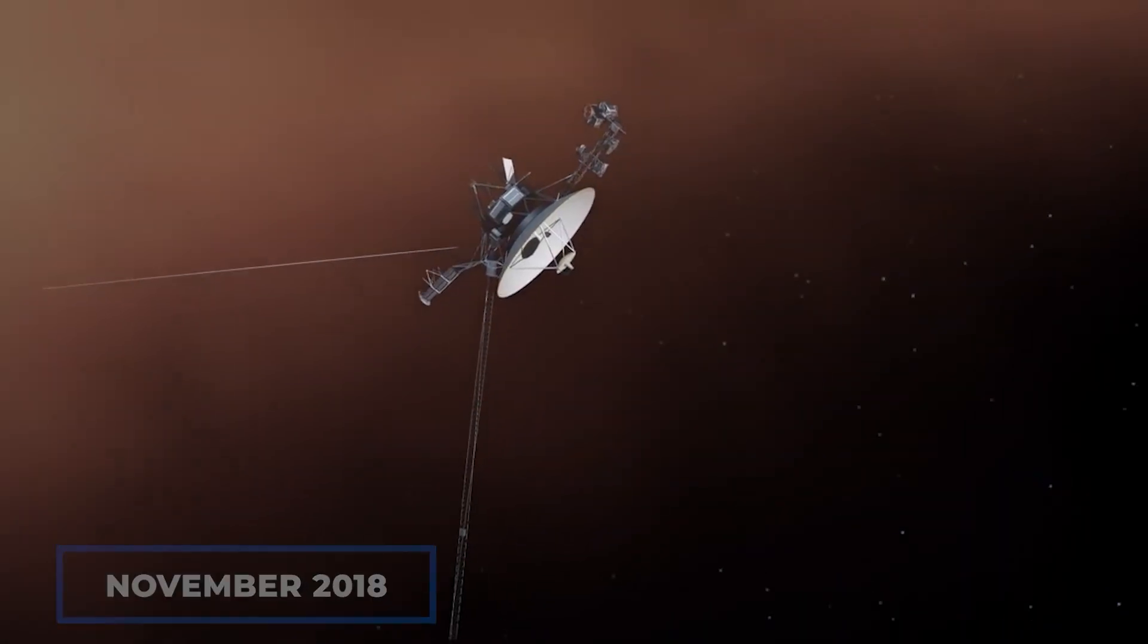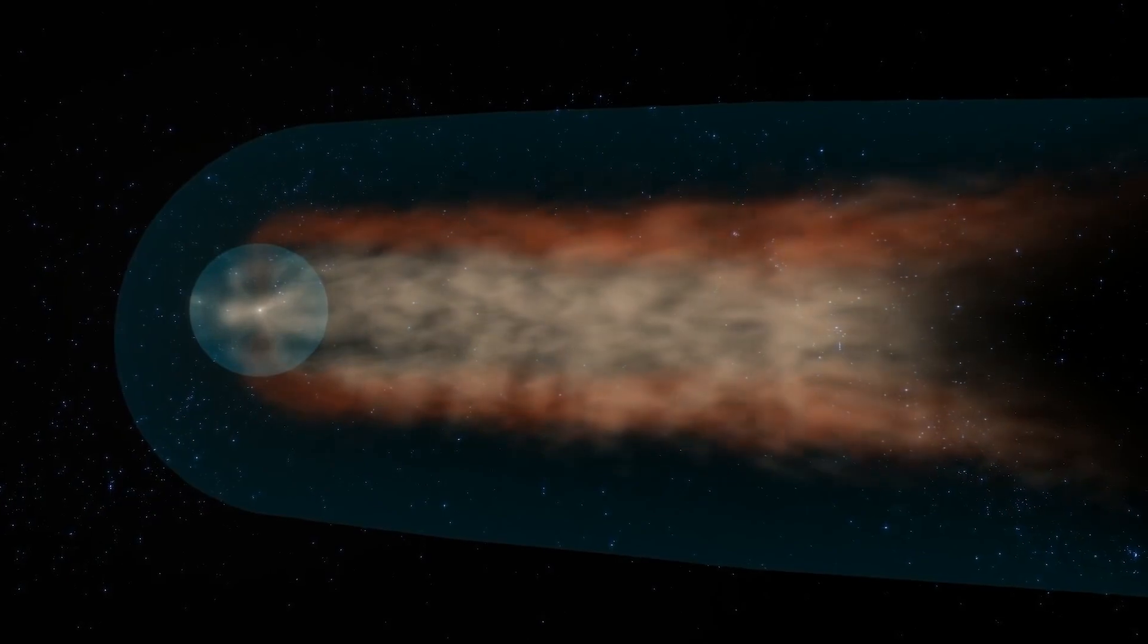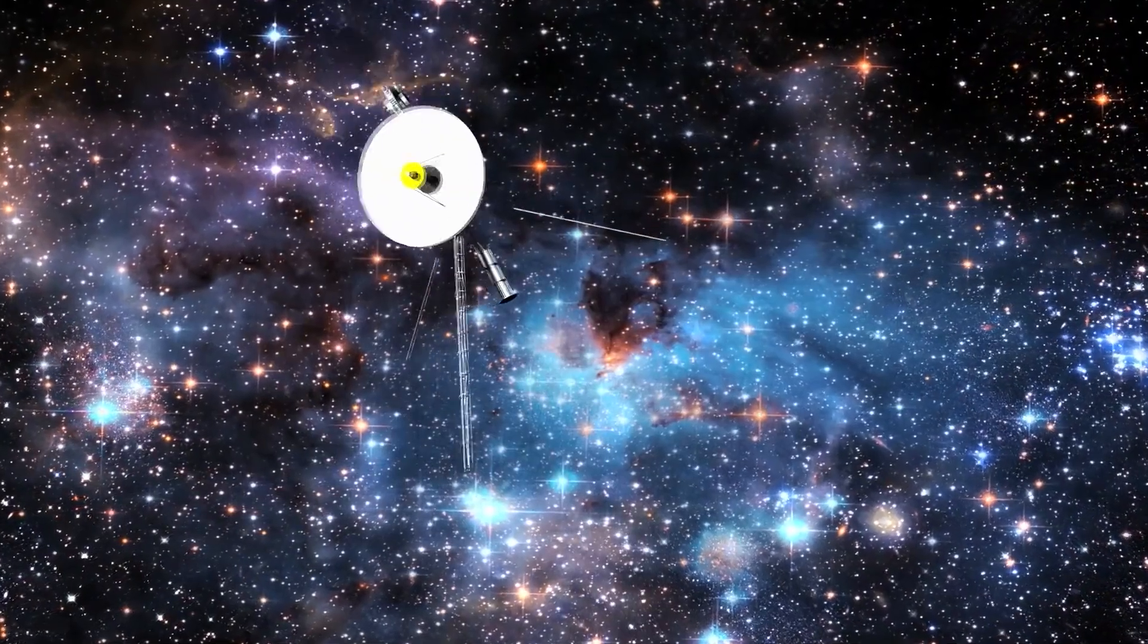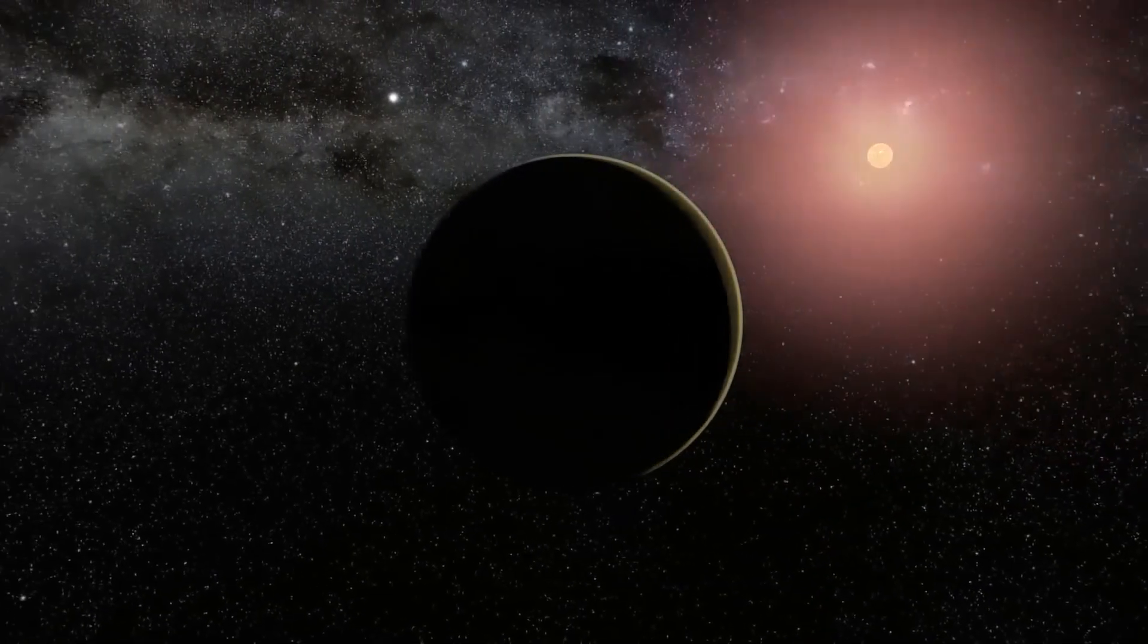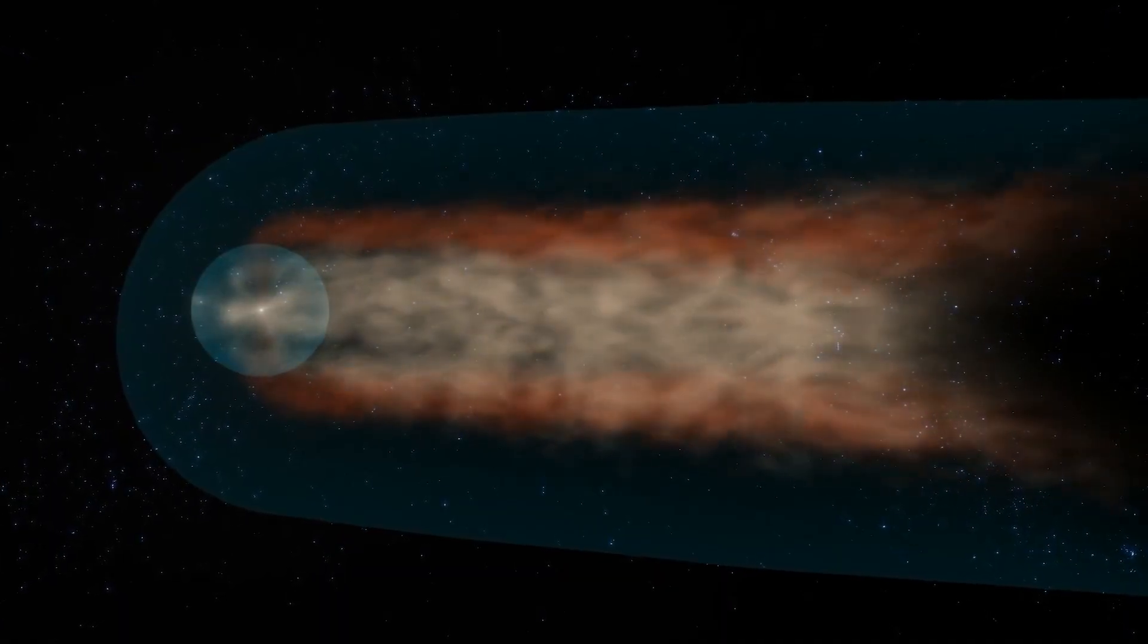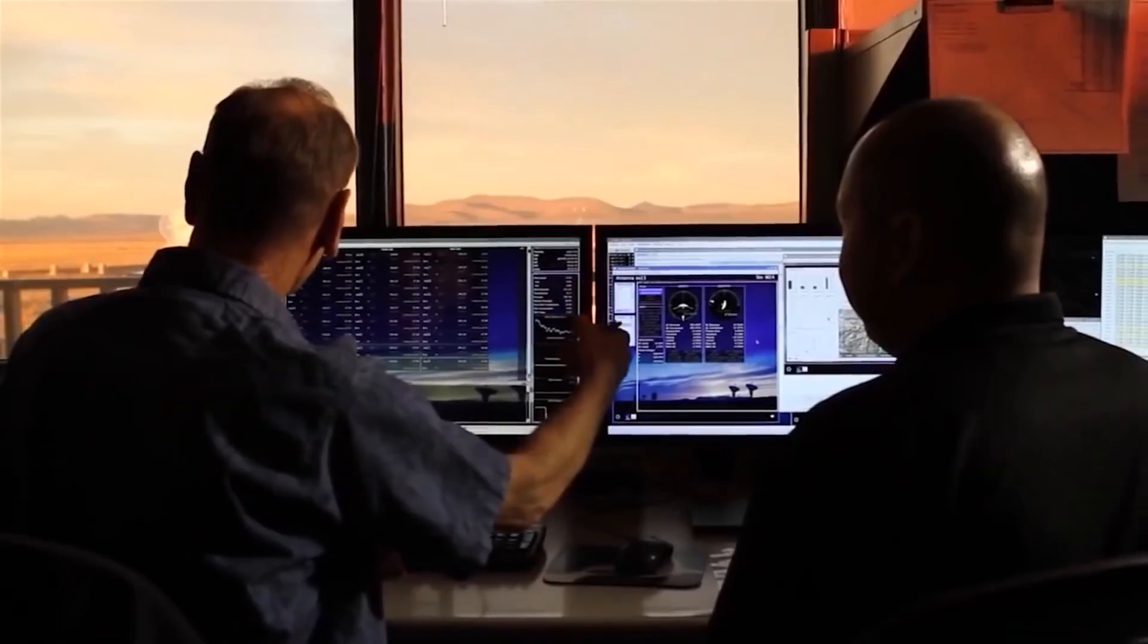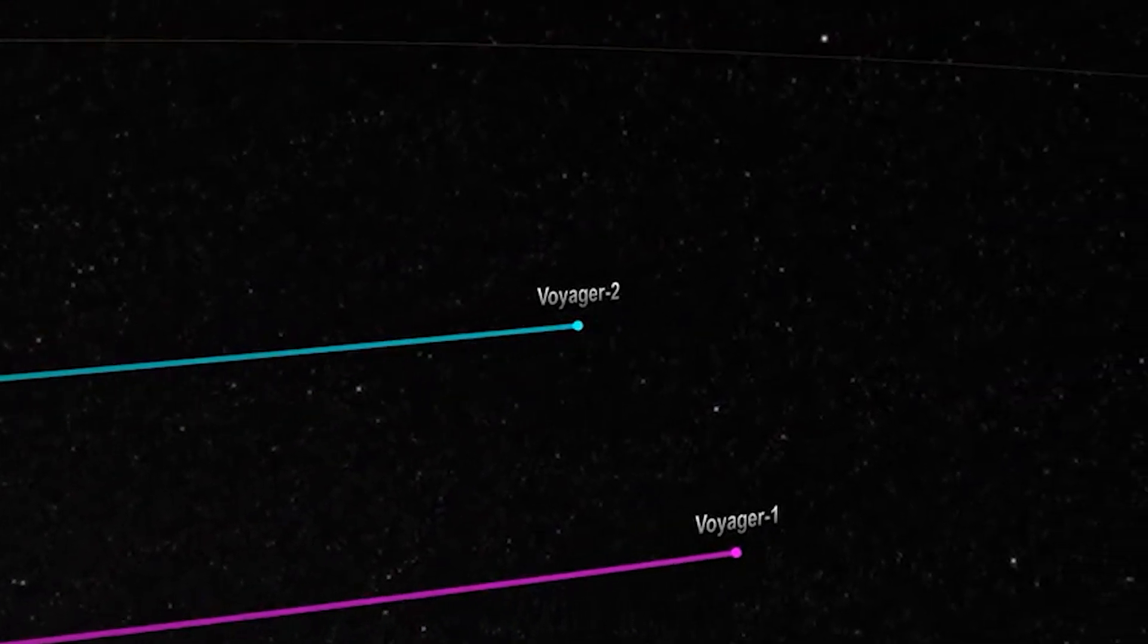In November 2018, Voyager 2 achieved a significant milestone by crossing the heliopause and venturing into interstellar space, following in the footsteps of its predecessor, Voyager 1. This momentous event marked a new phase in our understanding of the boundary between the Sun's domain and the vast interstellar medium. Voyager 2's journey beyond the heliopause presented scientists with a valuable opportunity to compare and analyze the observations made by both spacecrafts, deepening our knowledge of this celestial frontier.